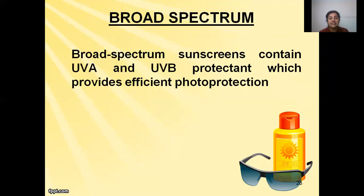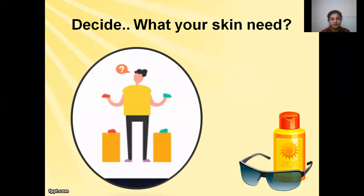Broad spectrum is a requisite for complete photo protection. It's not only UVB rays that are harmful — UVA rays are equally and in fact more harmful. For complete photo protection our sunscreen should be broad spectrum and does not need to be of high SPF. Broad spectrum sunscreens contain both UVA and UVB protectants, which provide efficient photo protection. Indian skin is basically type 4 and type 5, which has an inherent SPF of 4, so we do not need high SPF products which are available in the market.